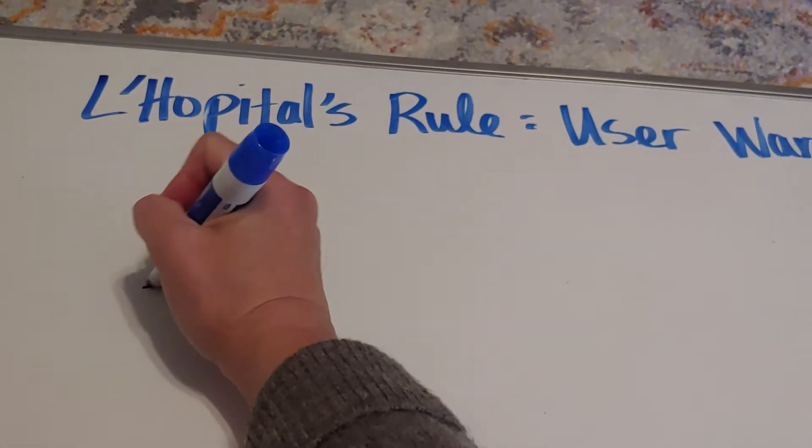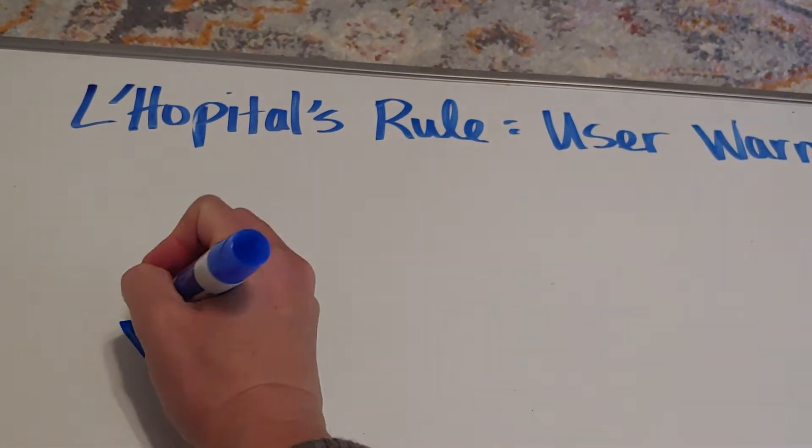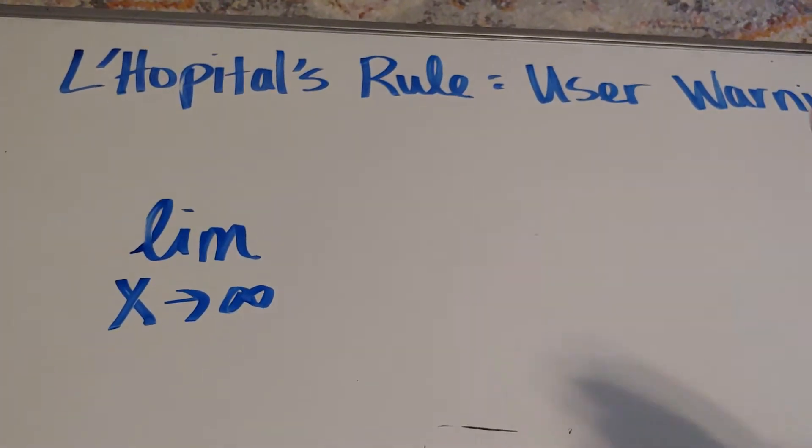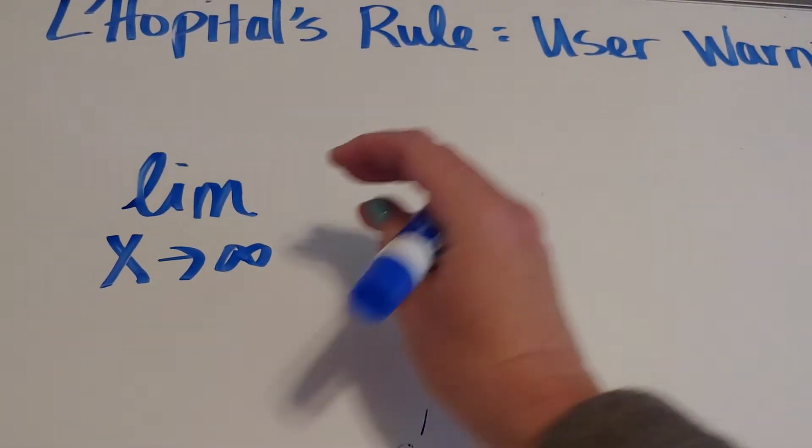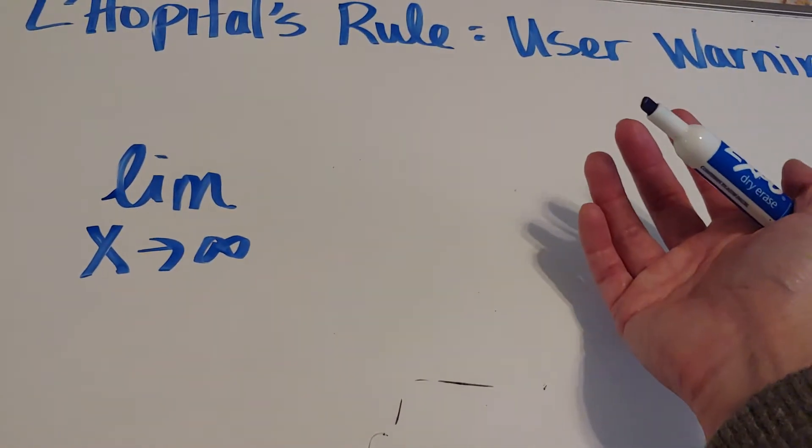One of the pitfalls is that you have to have the form of zero over zero or infinity over infinity. So if you don't have that form, then you can't use it.